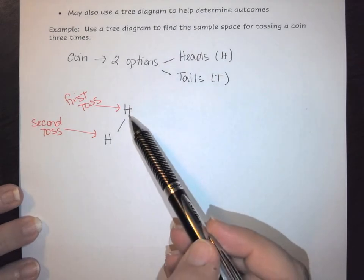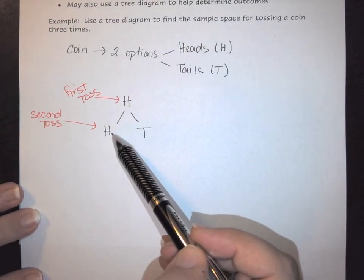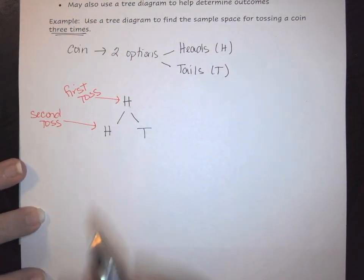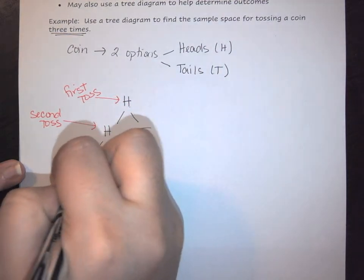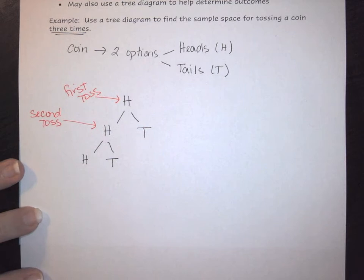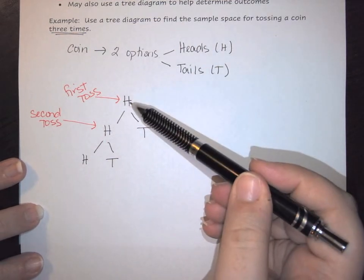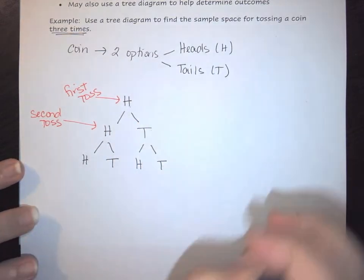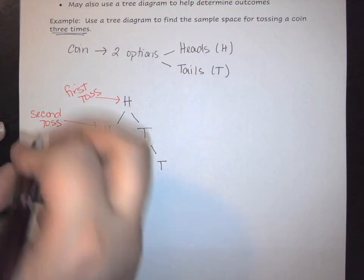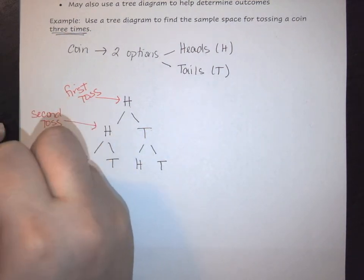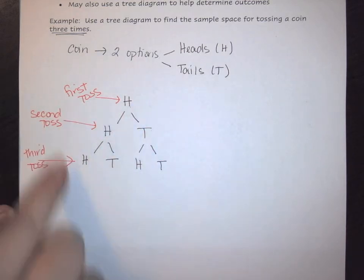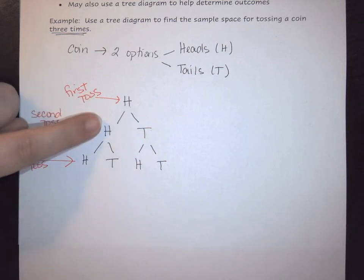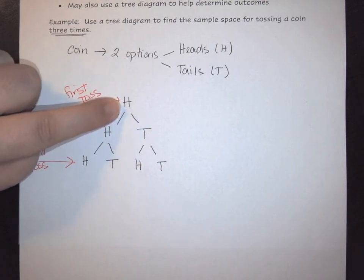If I tossed heads and then heads, I still have to toss one more time since the problem says three tosses. On the third toss, I again have two choices: heads or tails. If I had started with heads and tossed to tails on the second, the third toss still only has two options — heads or tails. This bottom row represents your third toss.